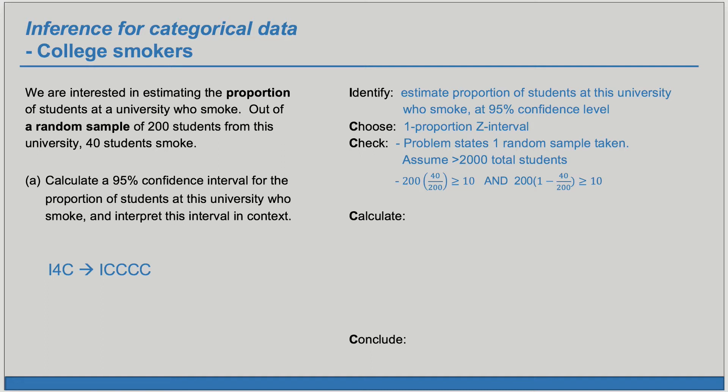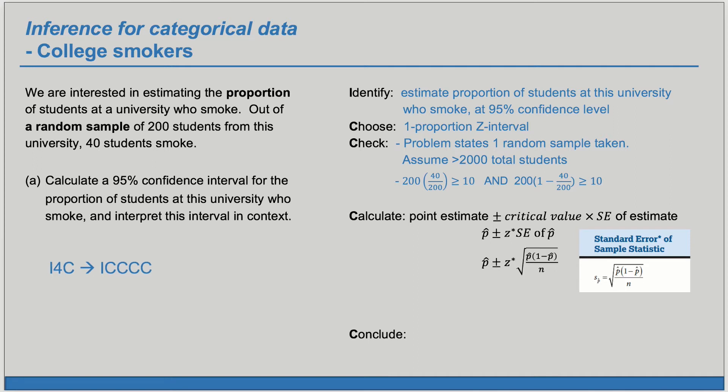Now we're ready to calculate. Confidence interval has the form point estimate plus or minus critical value times the standard error of the estimate. Our point estimate for the true proportion is the sample proportion p-hat. Because we're basing this on a normal distribution, our critical value is z-star. If we don't remember how to find the standard error of p-hat we can look it up. The standard error of p-hat is the square root of p-hat times 1 minus p-hat over n.